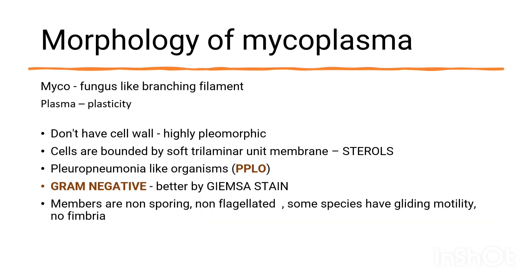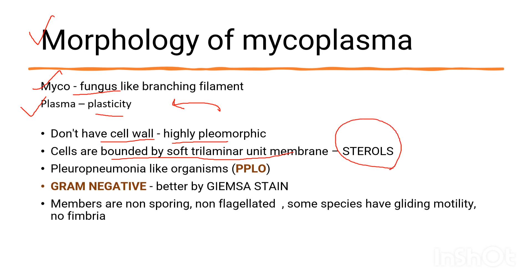Morphology: Mycoplasma is a fungus-like branching filament. The organism has plasticity and lacks a cell wall, making it highly pleomorphic. The plasma membrane is bound by a trilaminar unit membrane. It is also called a pleuro-pneumonia-like organism, as it causes pneumonia.